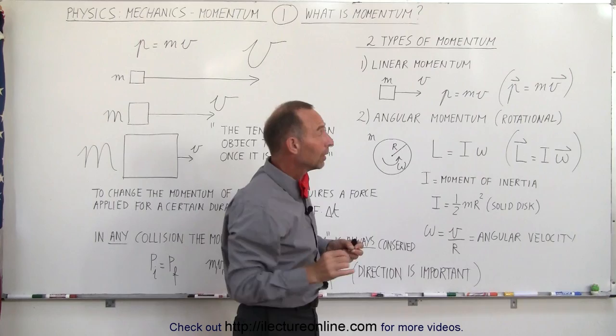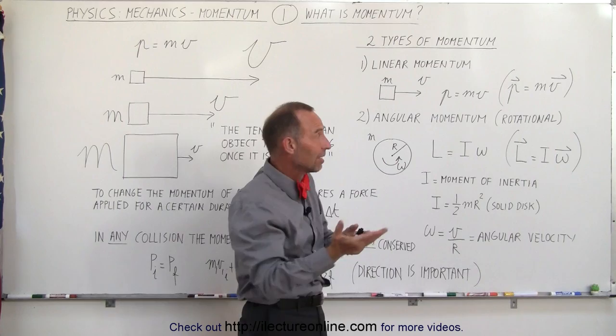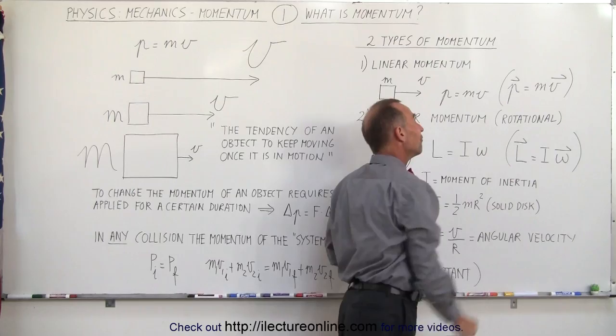Now take note that momentum is actually a vector quantity, which means it has magnitude and direction. That is because velocity is a vector quantity. When we multiply the mass times velocity—mass being a scalar, velocity being a vector—that means momentum is going to be a vector as well.